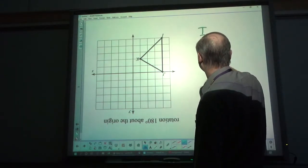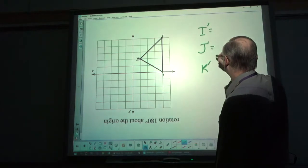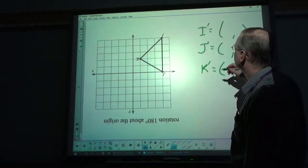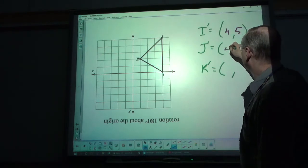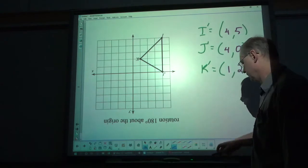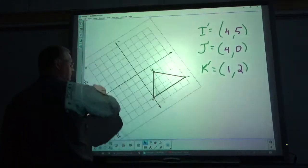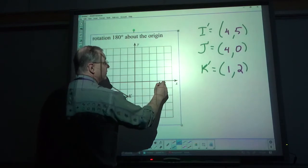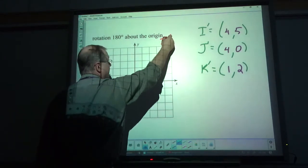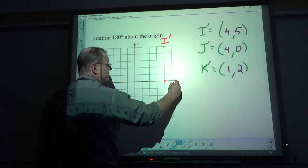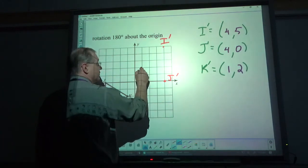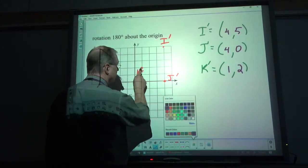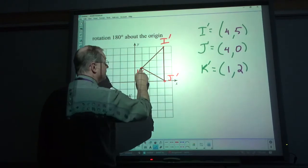So we're talking about I, J, and K. I ends up at 4, 5. J is at 4, 0. And K is at 1, 2. Let's rotate it back and plot those points. 4, 5. That's I prime. 4, 0. J prime. And 1, 2. K prime. And we'll connect it up. And there you go.